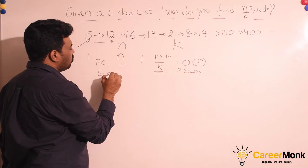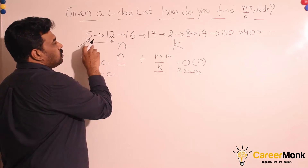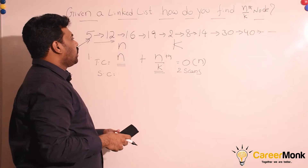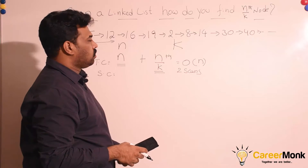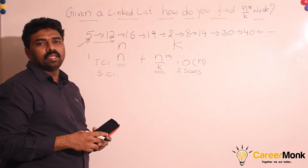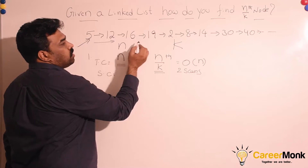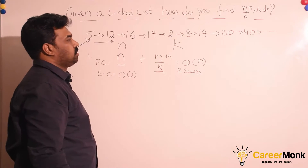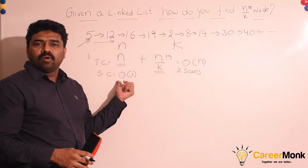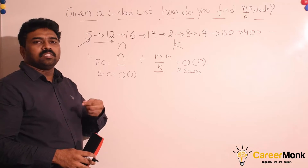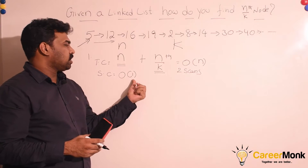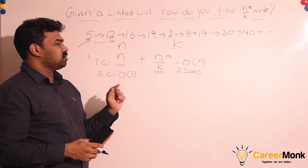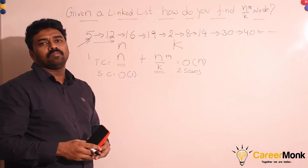What is the space complexity of this solution? The linked list is already given — we don't have to create it. To find the length or traverse to the n/kth node, just one simple variable is enough. So the space is not varying in terms of n; the space complexity is O(1). Time complexity is O(n), space complexity is O(1), but with two scans.